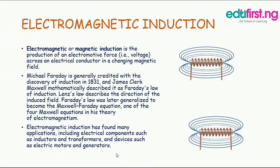When the anode and the cathode are connected by an electrical conductor like a wire, electrons flow from the anode through the wire to the cathode, creating an electrical current. The electrolyte conducts positive currents in the form of positive ions or cations.